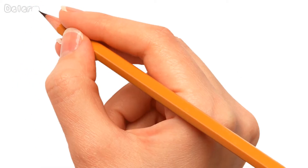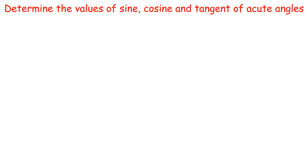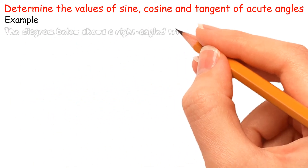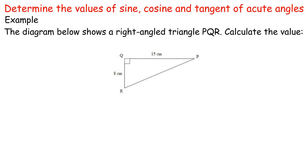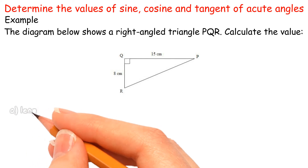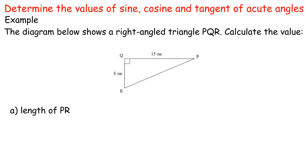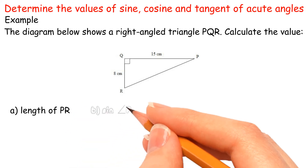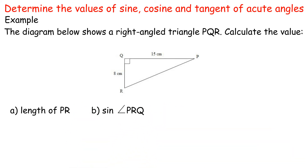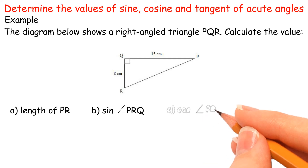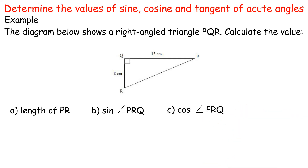Determine the values of sine, cosine and tangent of acute angles. Example A: The diagram below shows a right-angled triangle PQR. Calculate the value of: (A) length of PR, (B) sin angle PRQ, (C) cos angle PRQ, (D) tan angle QPR.